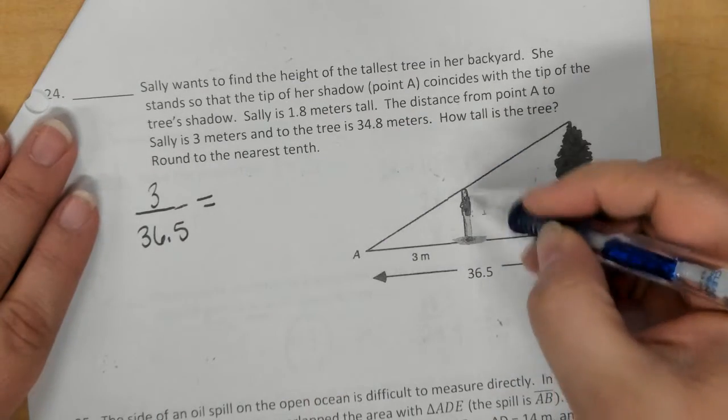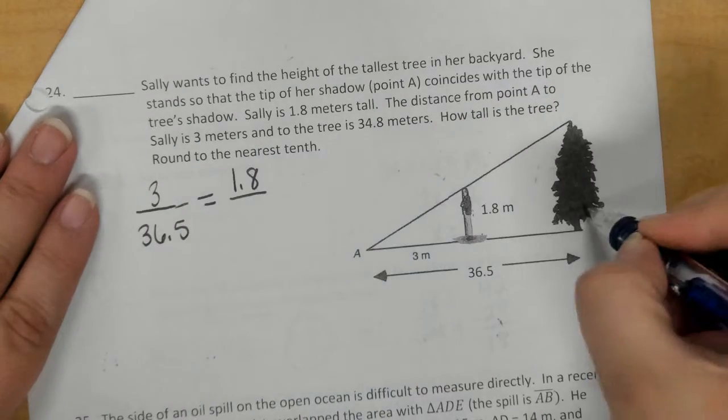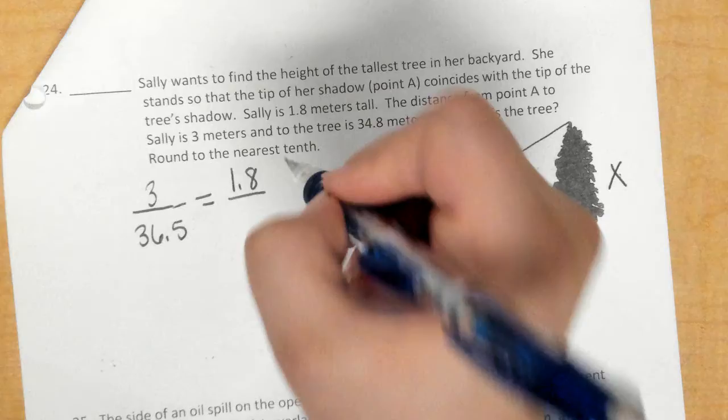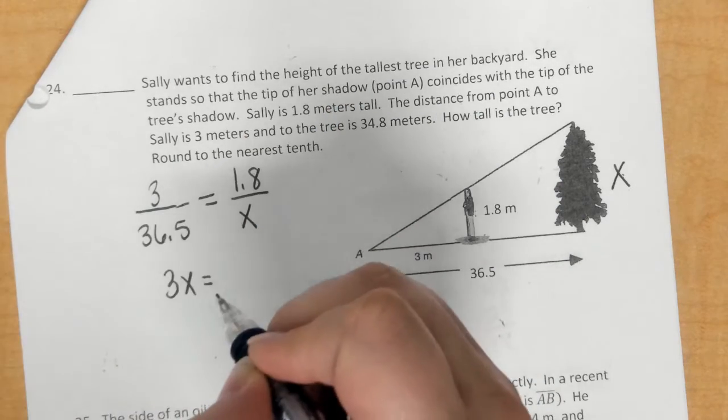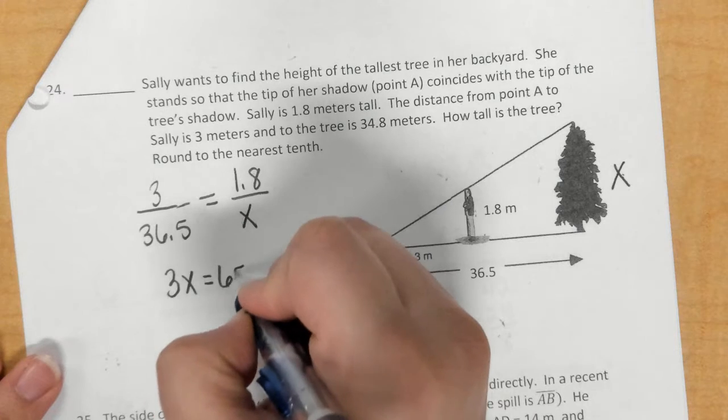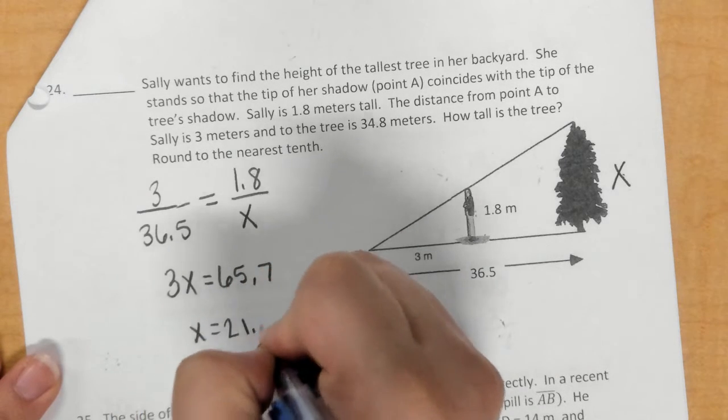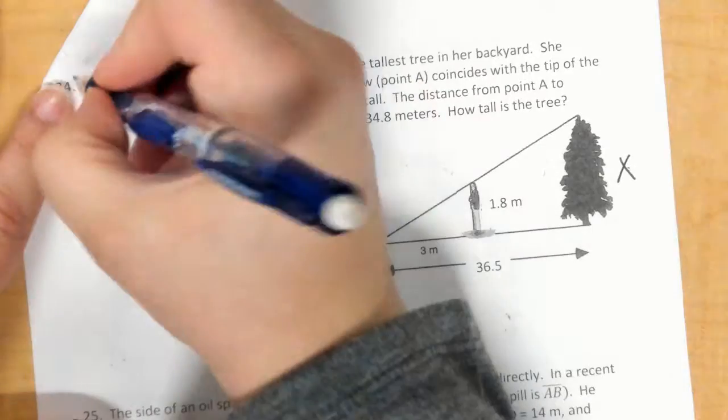That would equal Sally's height, which is 1.8 meters, over the tree height. We don't know x. So, you've got to fill that in as x. And if I cross multiply, we get 21.9 meters.